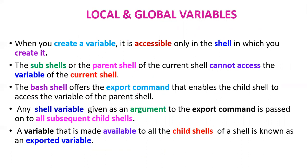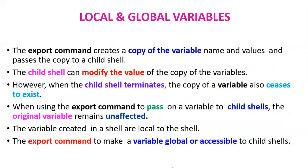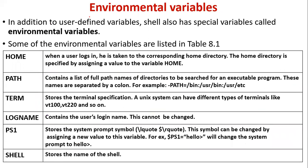The shell offers the export command that enables a child shell to access variables of the parent shell. Any shell variable given as an argument to the export command is passed on to all subsequent child shells — this is called an exported variable. The export command creates a copy of the variable name and value and passes it to the child shell. The child shell can modify its copy, but when the child shell terminates, that copy ceases to exist and the original variable in the parent shell remains unaffected.